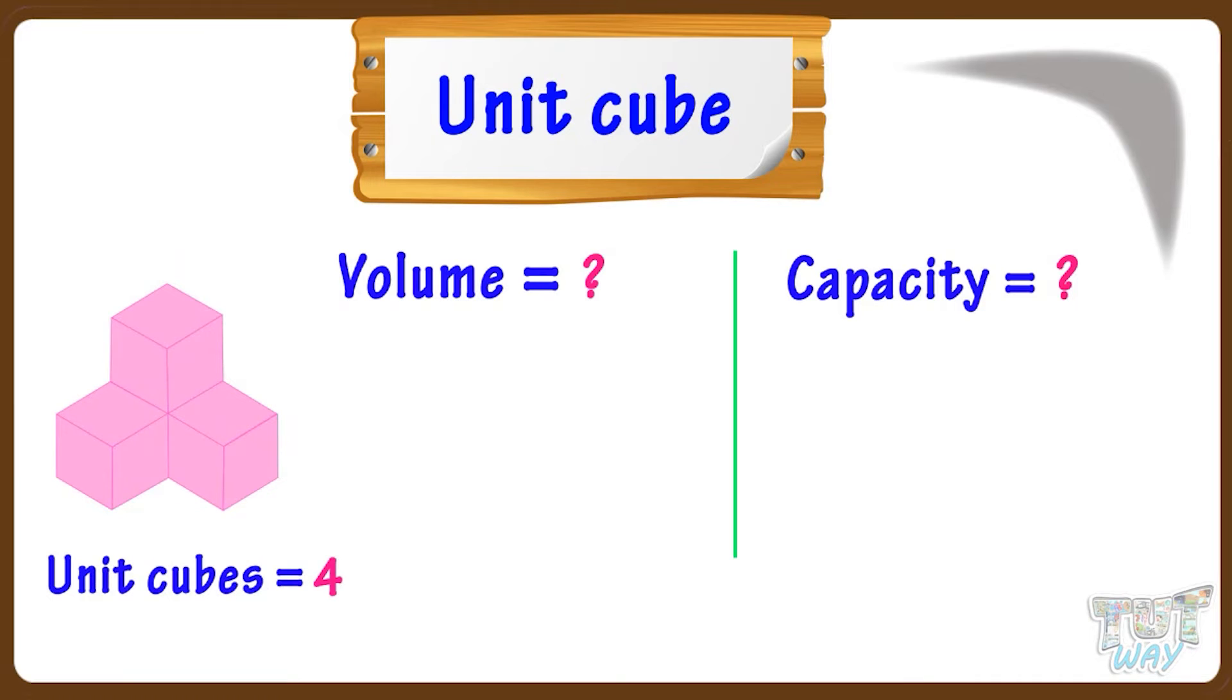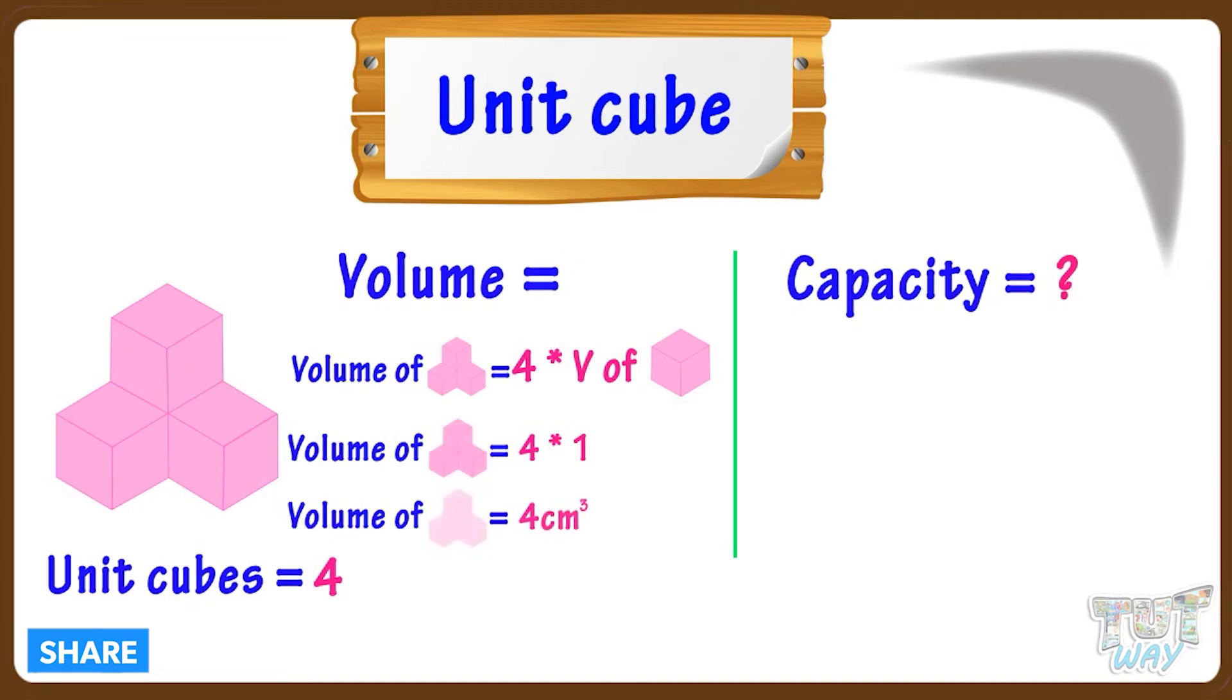So its volume is equal to the volume of four unit cubes. So the volume of this figure is four multiplied by volume of a unit cube. And we know volume of a unit cube is one centimeter cube. So volume of this figure is four multiplied by one, that is, four centimeter cube.